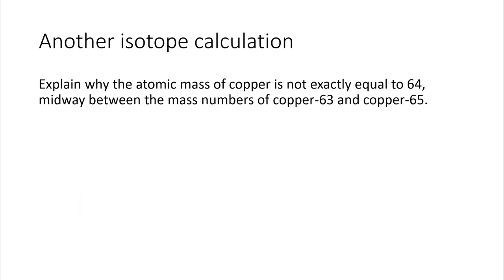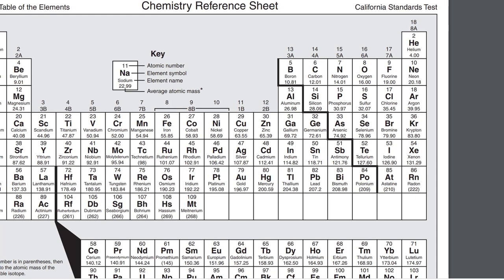And the last question on here: Explain why the atomic mass of copper is not exactly equal to 64, midway between the mass numbers of copper-63 and 65. So what they're saying here is there's only two isotopes, 63 and 65. So if the average was perfectly 50% of this and 50% of that, the average would be 64. But it's not equal to 64. If we take a look at our periodic table here, we see that copper has this mass of 63.55. They want you to explain, why is it 63.55 and not 64?